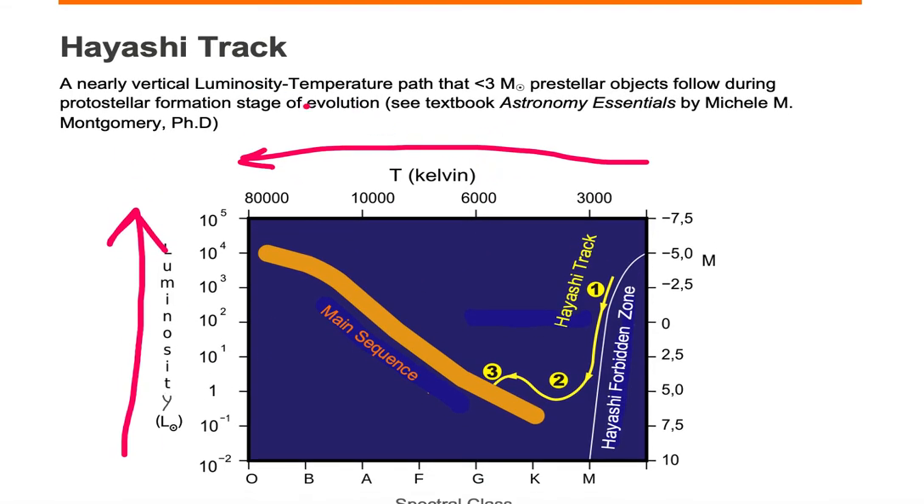Let's take a look at the Hayashi track. Here we're looking at luminosity increasing on the vertical axis and temperature increasing to the left on the horizontal axis. So we're looking at a luminosity-temperature path.